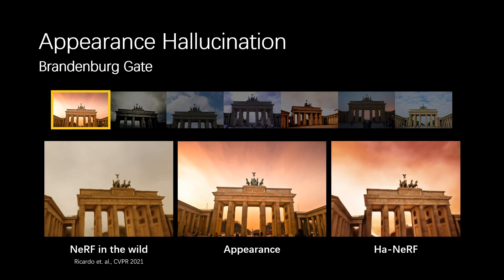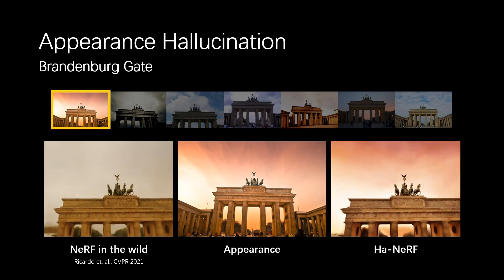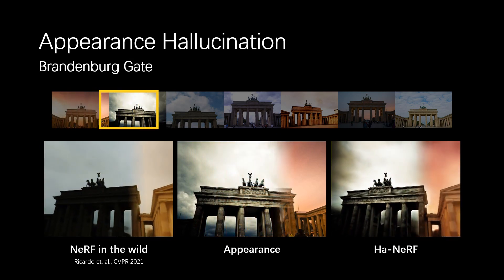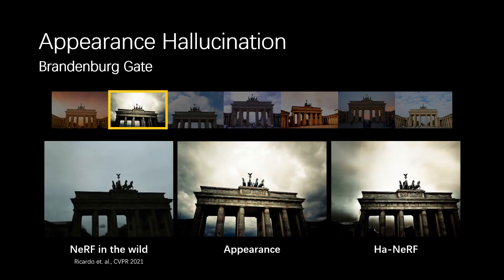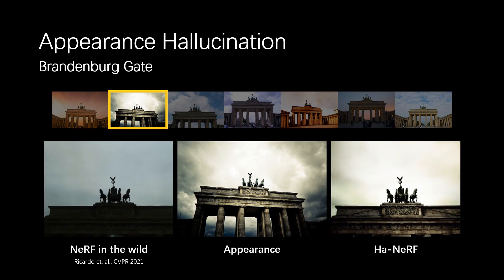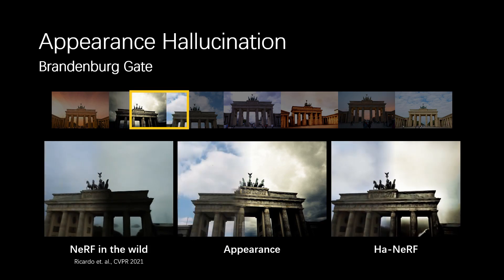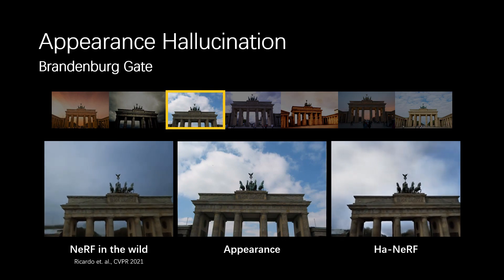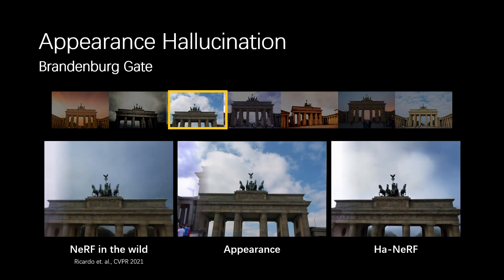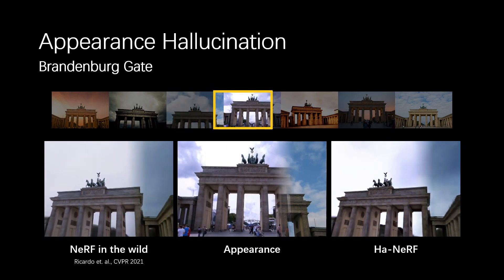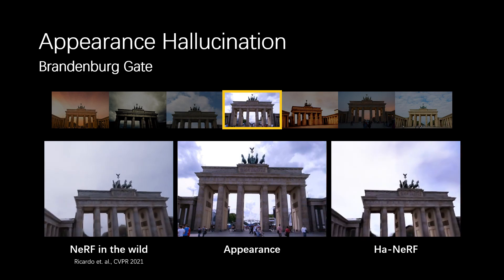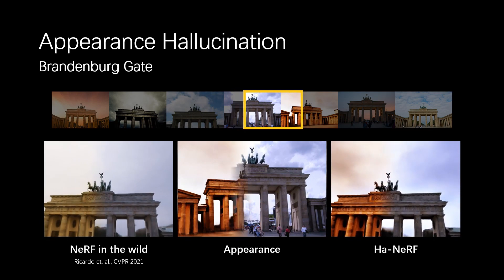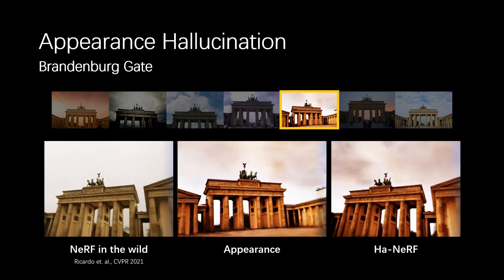By conditioning the color on the vector, we can modify the appearance of renderings. Here we show the hallucination of the Brandenburg Gate, conditioned on example images with different appearances such as weather, season, and post-processing. We also show the results of NERF-W, where the appearance vectors are optimized during training. Notice that HA-NeRF hallucinates realistic renderings while NERF-W suffers from global color shifts compared with the example images.